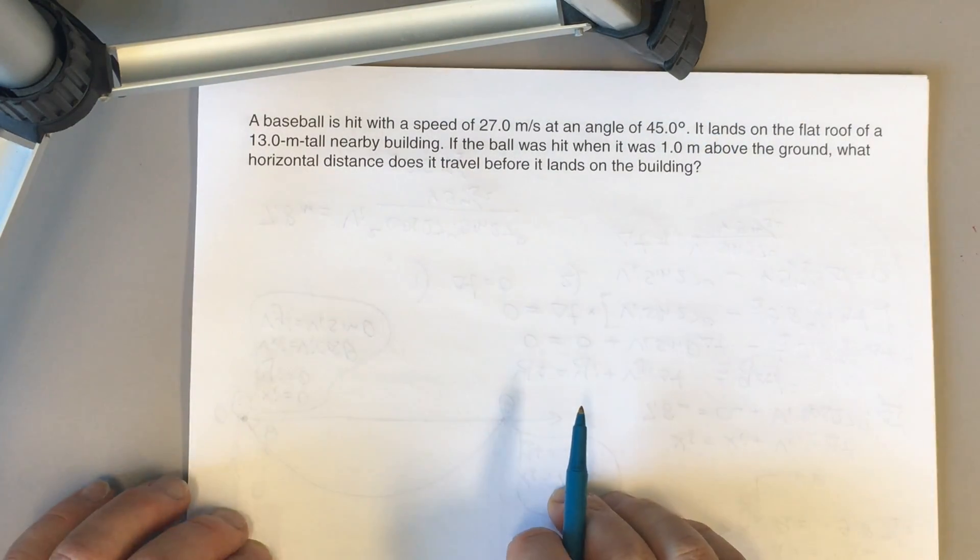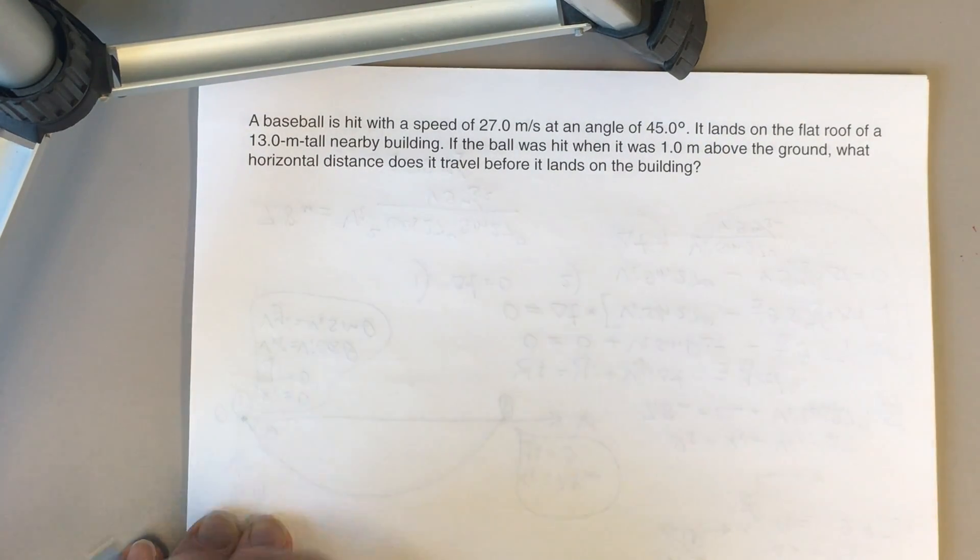A baseball is hit with a speed of 27 meters per second at an angle of 45 degrees. It lands on the flat roof of a 13-meter tall nearby building. If the ball was hit when it was 1 meter above the ground, what horizontal distance does it travel before it lands on the building? So we have three numbers in our condition of the problem.